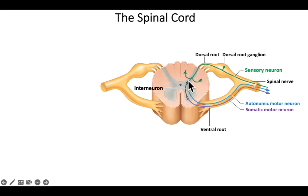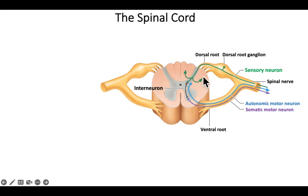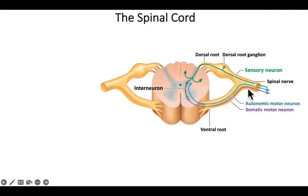That signal comes in, and the gray matter is going to determine what it needs and where it needs to go. If it needs to go up to the brain, it's going to send the signal into a track leading up to the brain. Or maybe that signal needs to go immediately back out as a reflex — this path here, using this black-colored interneuron, is a reflex.